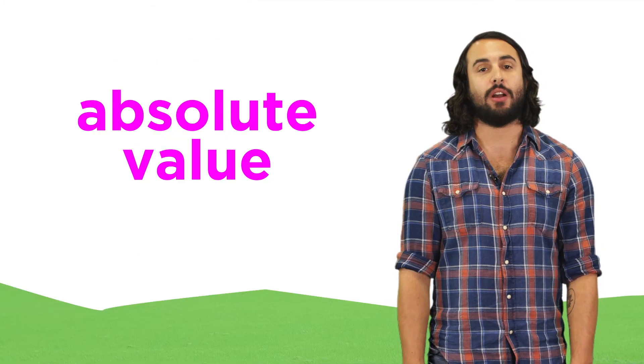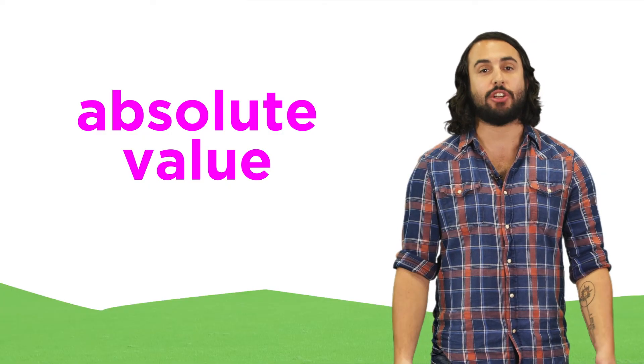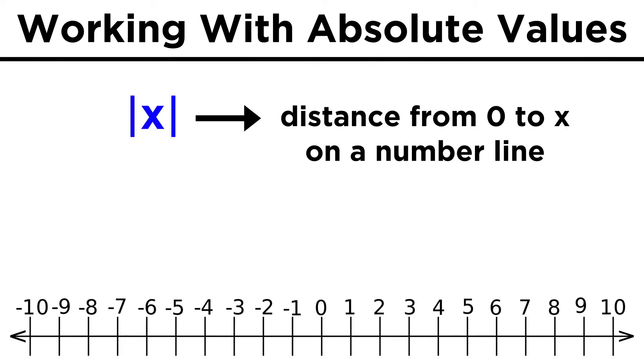It's important to know what these are and how to graph them, so let's become familiar with this definition. The absolute value of any real number x, which is denoted by these little bracket type things, is the distance from zero to that number on a number line.